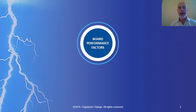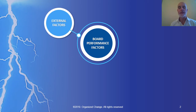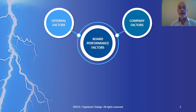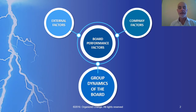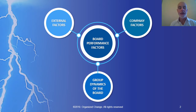When looking at factors that can affect board performance, you can think of them in three different areas. First of all, external factors. Second of all, company factors. And third, the group dynamics of the board.